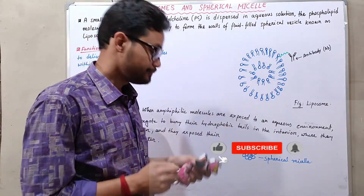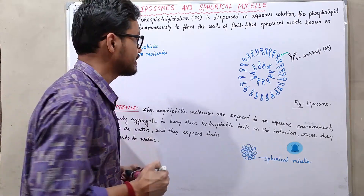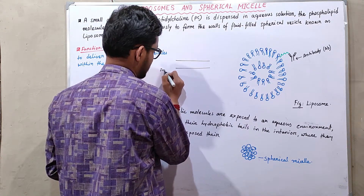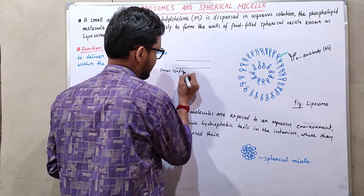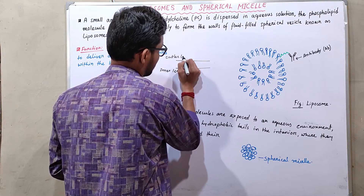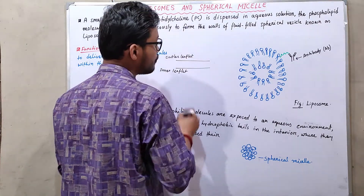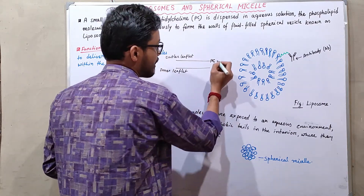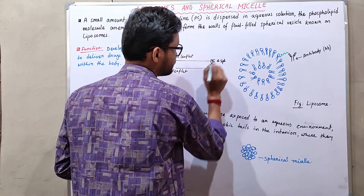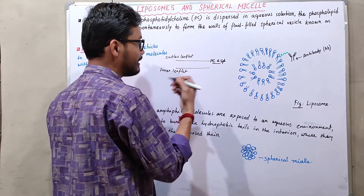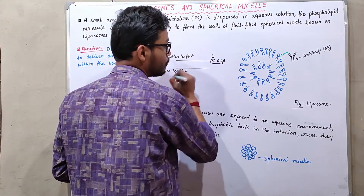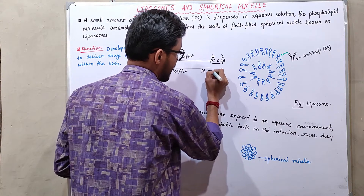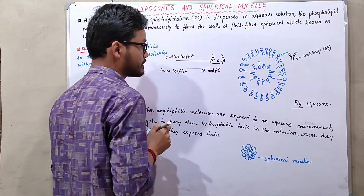First, let's discuss liposomes. Looking at the plasma membrane structure, we have the inner leaflet and the outer leaflet. In the outer leaflet, there is an abundance of phosphatidylcholine (PC) and sphingolipids. In the inner leaflet, we observe phosphatidylserine and phosphatidylethanolamine. So both leaflets have distinct lipid compositions.